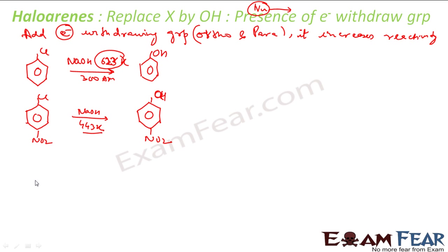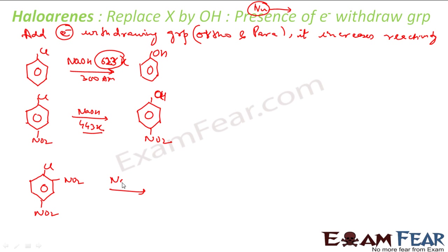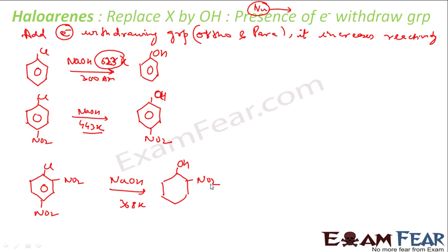If you put one more nitro group, what we observe experimentally is that NaOH needs lesser temperature — 368 Kelvin — to give the substitution reaction. The Cl becomes OH, and we now have two NO2 groups on the ring.